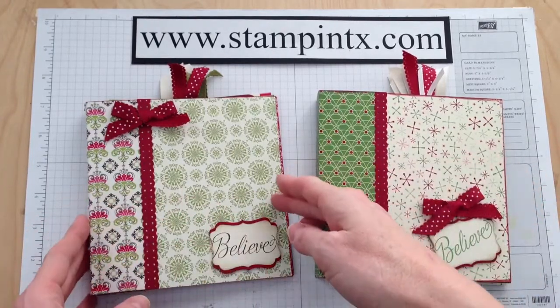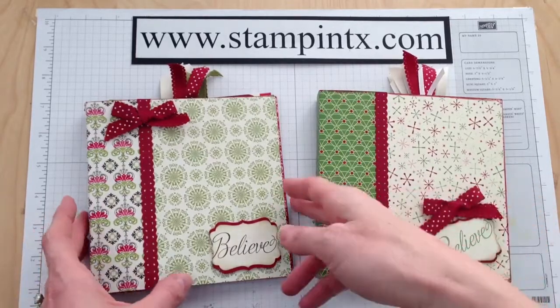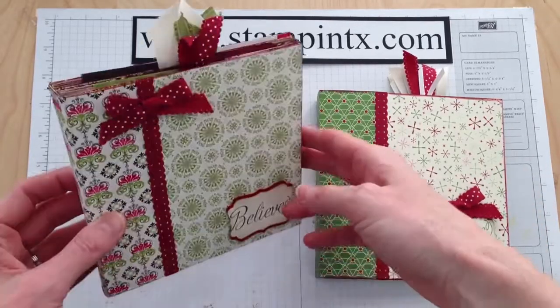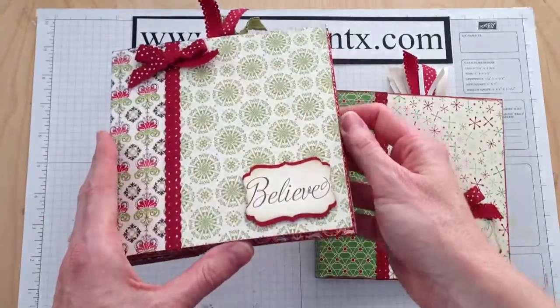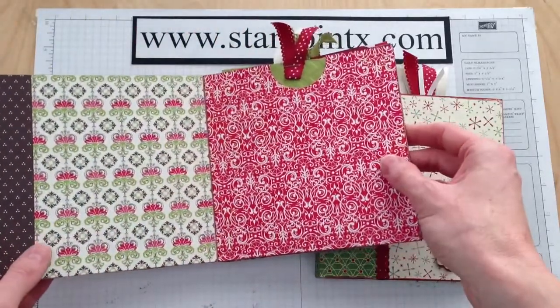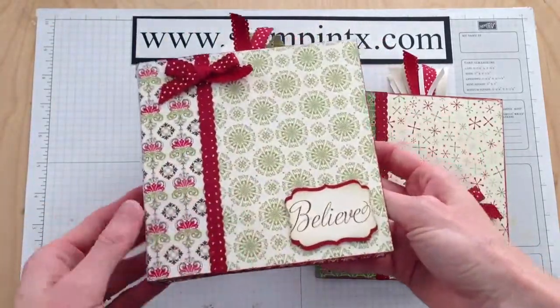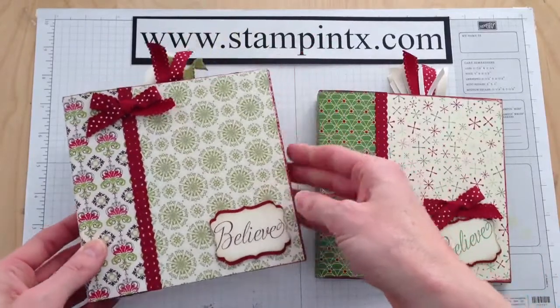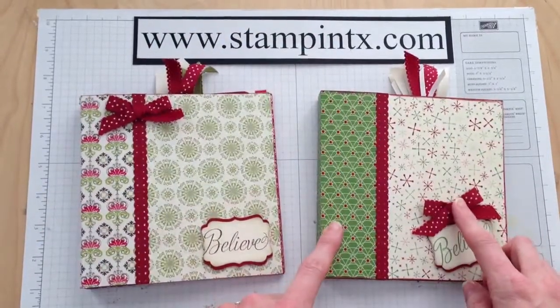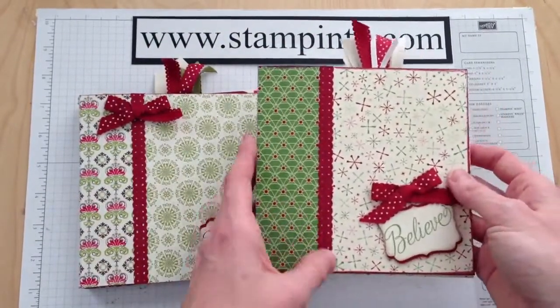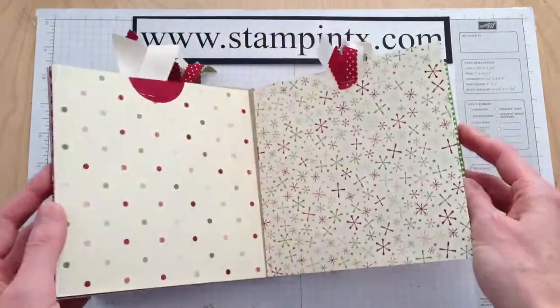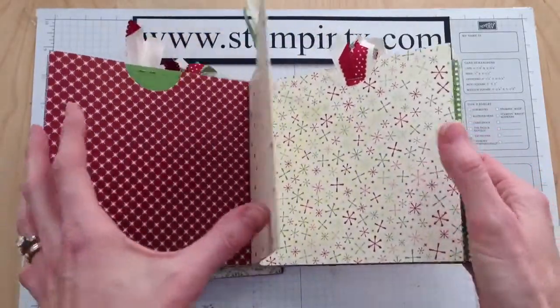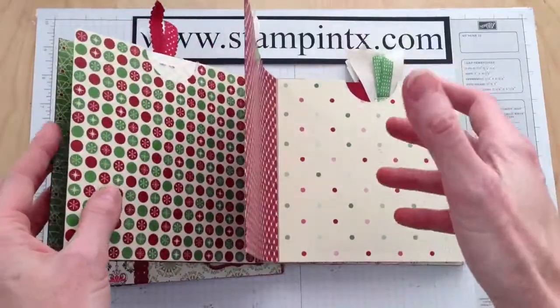These are just little 6x6 albums that I created, and I wanted to share with you how I put these together. This particular album I used the Candlelight Christmas Specialty Designer paper, and this one I used the Be of Good Cheer paper. You can use any paper you have on hand, but these are such cute, fun books to make.